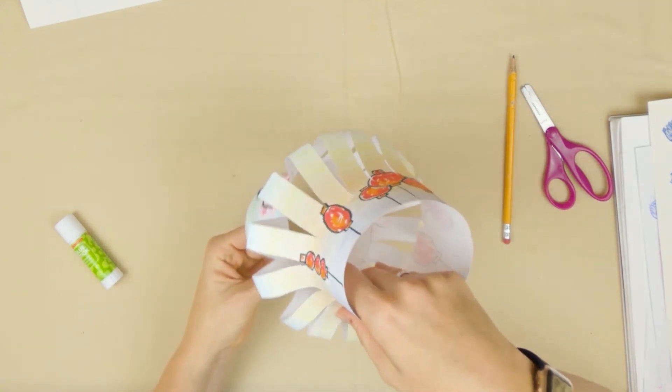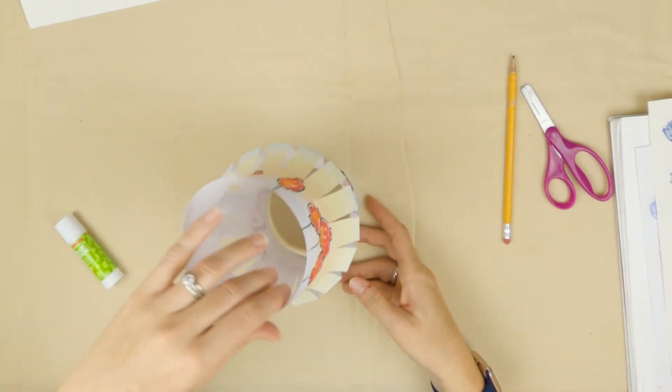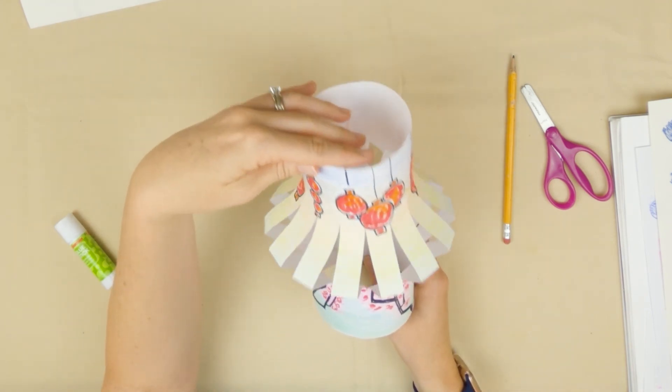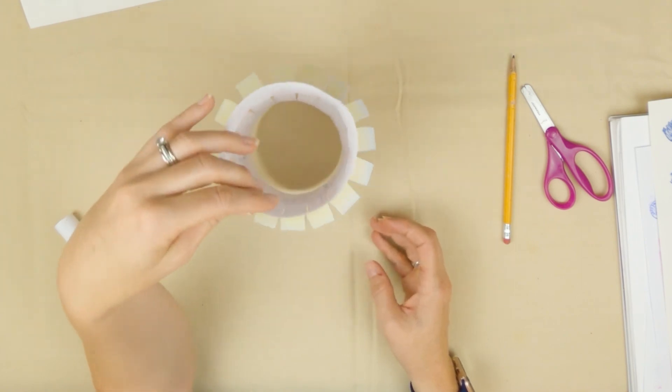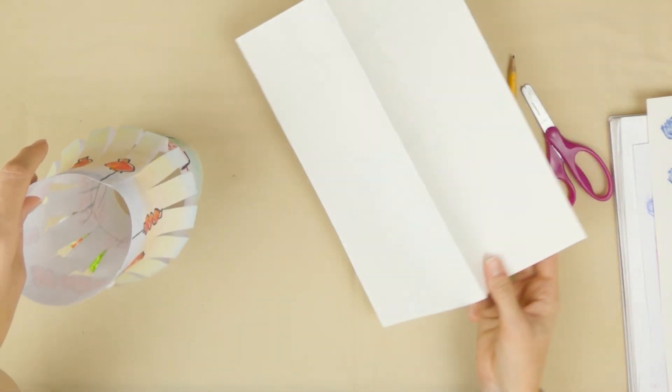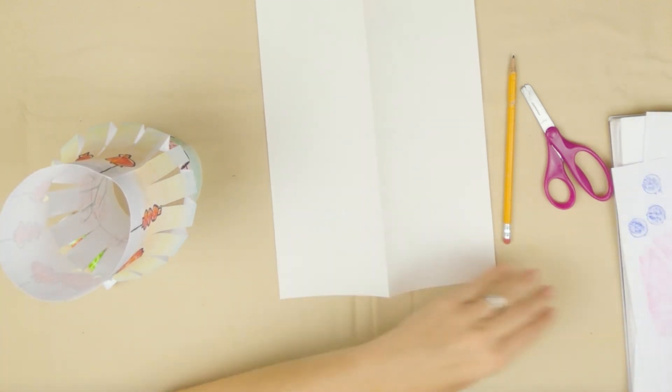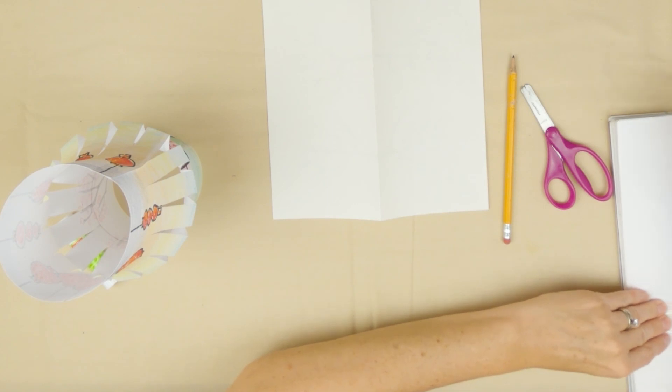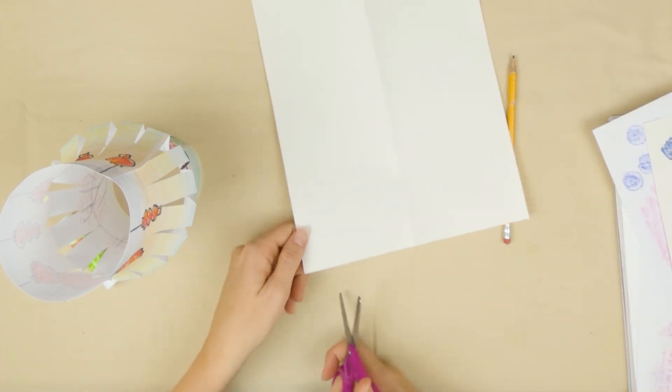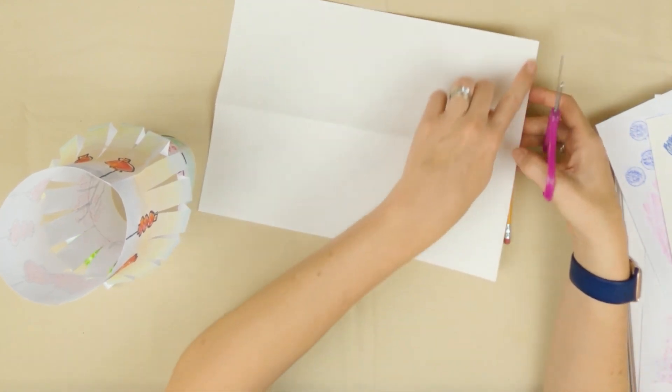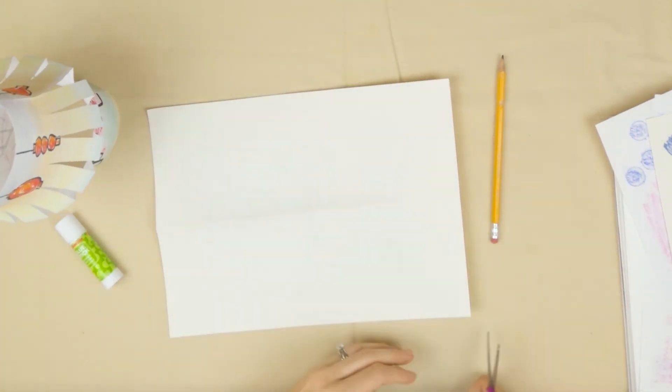Okay, that is the lantern portion. Now all we need to do is the handle, and the handle is very easy. You're just going to take some scrap paper. I can use this piece of paper or any sheet of paper I have. I'll just use this one. I'm just going to go ahead and I don't want to cut the long way, I just want to cut the short way.